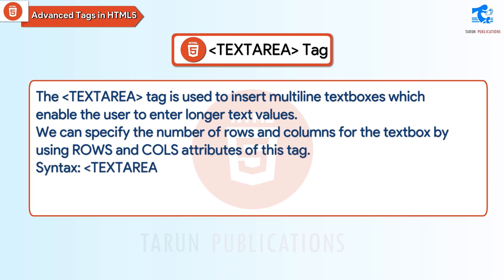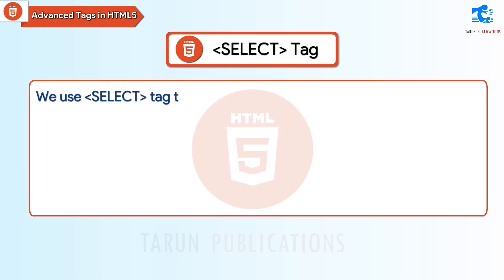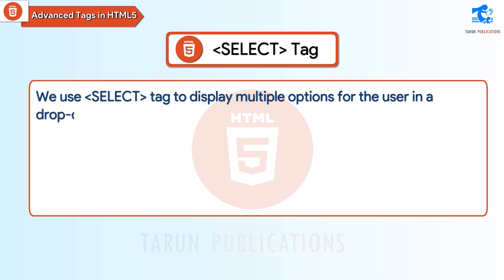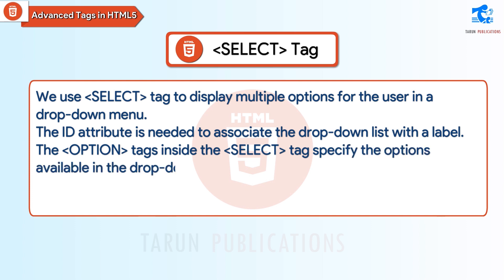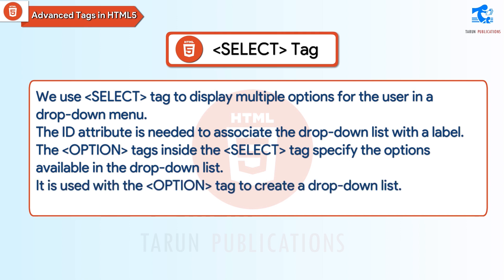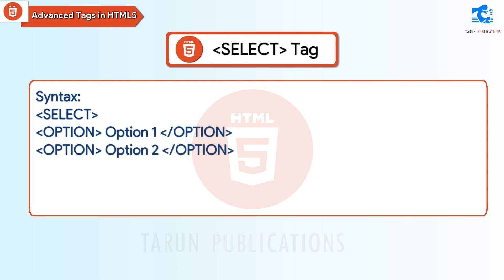Syntax: textarea rows="3" cols="50". Select tag: We use the select tag to display multiple options for the user in a drop-down menu. The id attribute is needed to associate the drop-down list with a label. The option tags inside the select tag specify the options available in the drop-down list. It is used with the option tag to create a drop-down list. Syntax: select, option 1, option 2, option 3, /select.